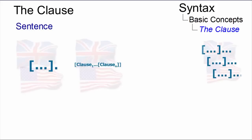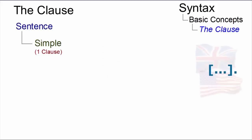Sentences can consist of any number of clauses. If a sentence consists of one clause, we call it a simple sentence, such as 'the cat sat on the mat.' Thus, the terms clause and sentence can be used synonymously here.